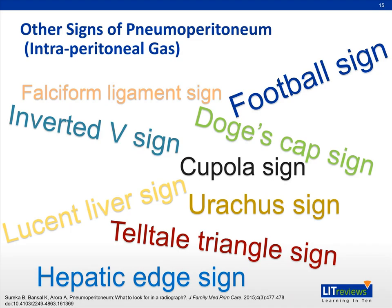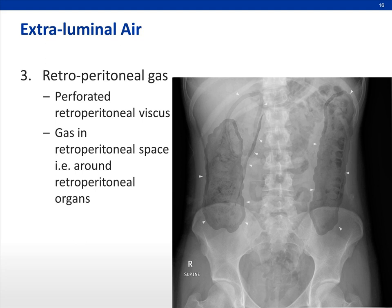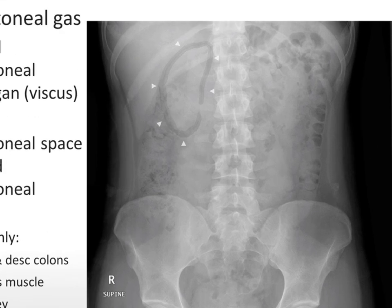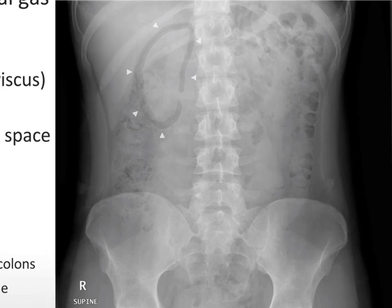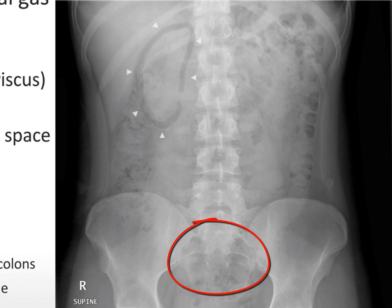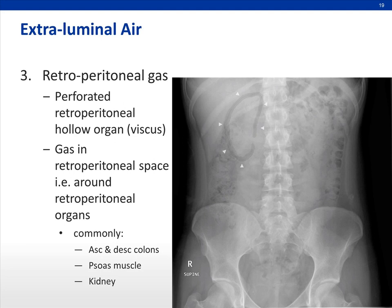There are many signs of pneumoperitoneum — at least 10 of them. Retroperitoneal gas is gas in the retroperitoneal space. You want to look for gas around retroperitoneal organs such as the ascending and descending colons, the psoas muscles, and around the kidneys. It is usually due to perforation of a retroperitoneal hollow organ — the ascending and descending colon, the second to fourth part of the duodenum, and the proximal rectum. However, it doesn't always mean perforation, because any pathology in the retroperitoneum that can produce gas, such as infection, can also result in retroperitoneal gas.